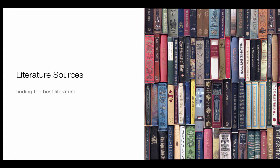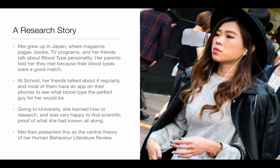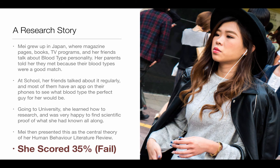So how do we find the best sources? Before we get into that, I'm going to tell you a research story. This fictional student called Mia grew up in Japan, where there's a big thing about blood type personality — and it's not just Japan, it's lots of Asian countries, but it originated from Japan. Her friends all talk about blood type, her parents say they work well because they're a good blood type personality match, and there are TV shows and magazines about it. She went to university, learned how to do research, and found lots of papers and journals saying that blood type personality is true. She used it as a central theory in her literature review, and she failed with 35%.